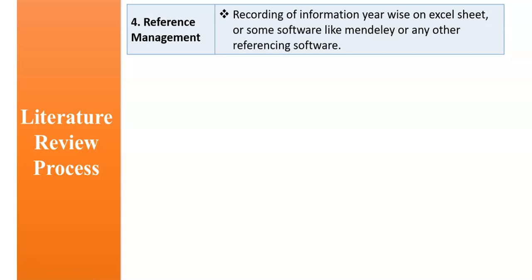Number four, reference management. It is recording of information year-wise on Excel sheet or some software like Mendeley or any other referencing software. You have done a lot of research and you have a number of articles with you. The question is how to manage, how to control them. So for this you can develop an Excel sheet with different columns and you can write topic, years, author's name, etc. You can use some free software like Mendeley to control this task.